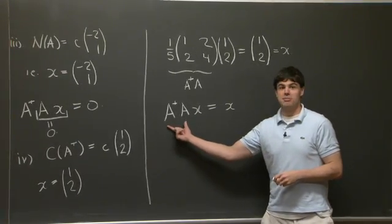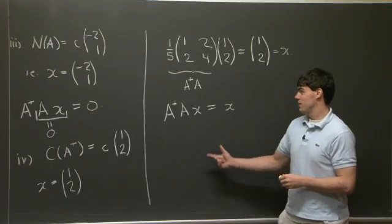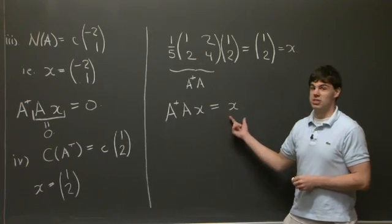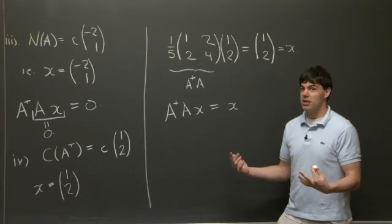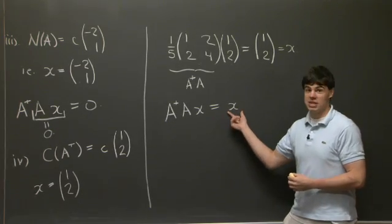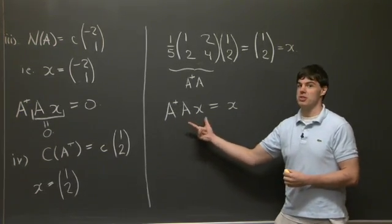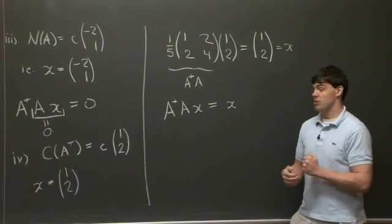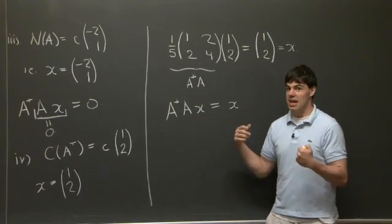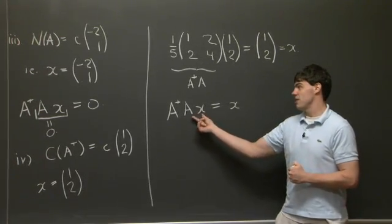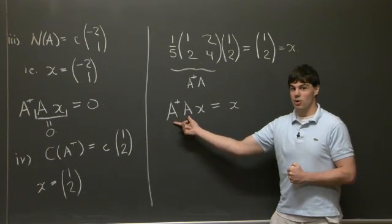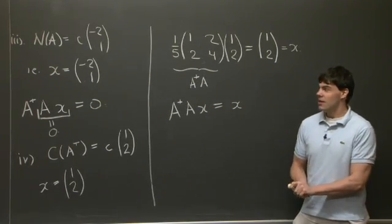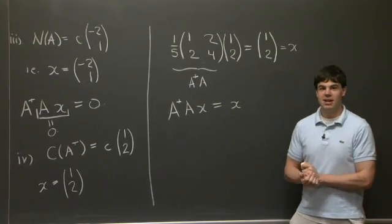So intuitively, what does A+A do? If x is in the null space of A, it kills it — we get 0. If x is in the column space of A^T, we just get x back — it acts like the identity. Specifically, if A is invertible, then A has no null space, so A+A recovers the identity on every vector. That concludes our discussion — see you next time.